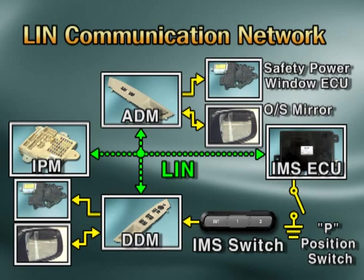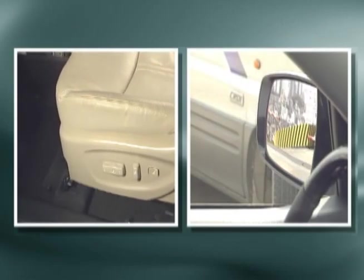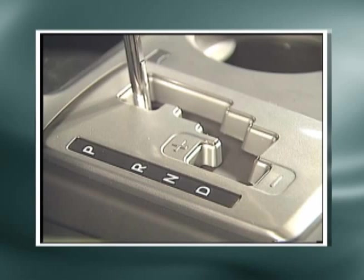Through the IMS feature, when the master module DDM receives the IMS switch signal for set P1 or P2 through the LIN communication line, it receives the transmission lever P switch on-off data required for IMS operation via an additional circuit, and operates the seat and side mirror with the position stored when the lever is at the P position.